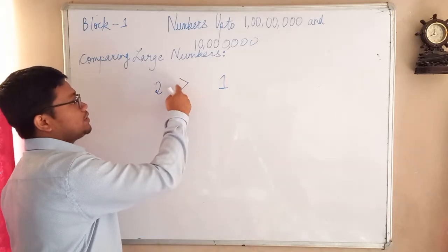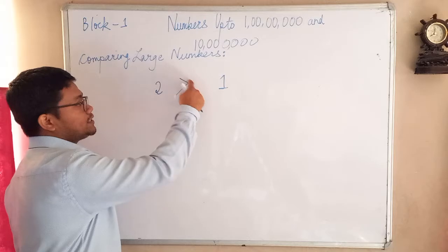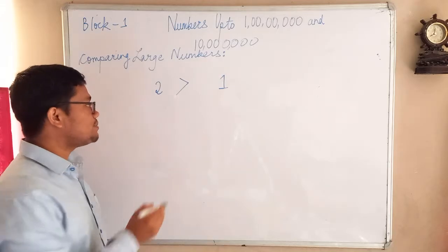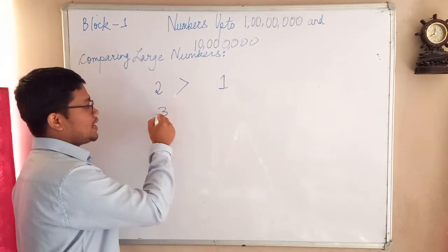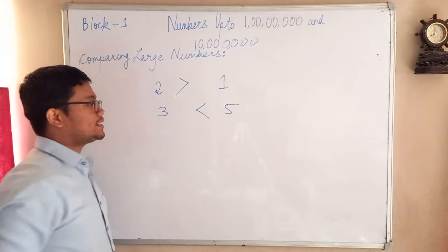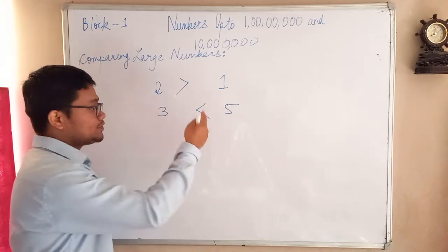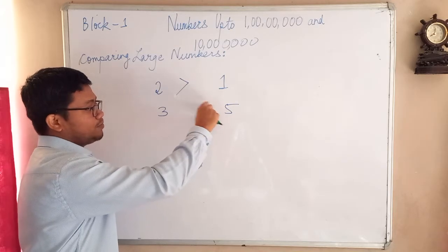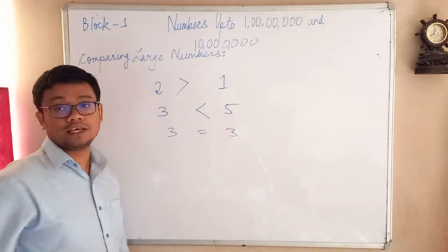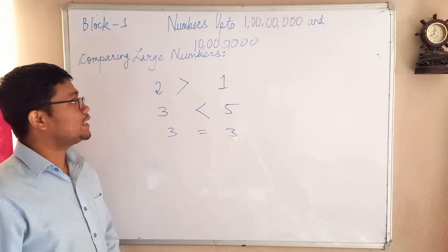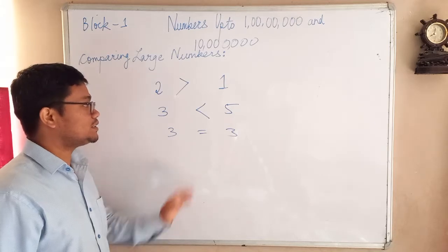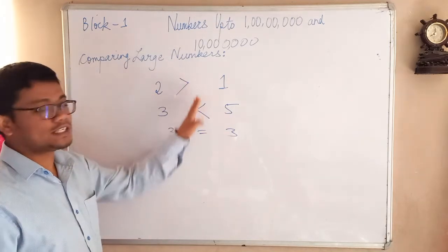That's why I put a sign like this — this sign shows that 2 is bigger than 1. Similarly, if I write another number like 3 and 5, which is bigger? Obviously 5 is bigger, so towards 5 you have to show a sign like this, which shows a bigger open surface. And if there are the same numbers, then we keep a sign equals to. So this is how we can compare large numbers.